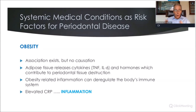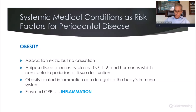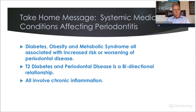When we look at obesity, there are associations but no causation. Adipose tissue itself releases cytokines — particularly tumor necrosis factor alpha and interleukin-6 — which contribute to periodontal tissue destruction. Inflammation from obesity can also deregulate the body's immune system, and that impaired immune system can affect periodontal disease progression. The take-home message related to systemic medical conditions affecting periodontitis: diabetes, obesity, and metabolic syndrome are all associated with increased risk or worsening of periodontal disease. Type 2 diabetes and periodontal disease have a bi-directional relationship, and all of these involve inflammation.